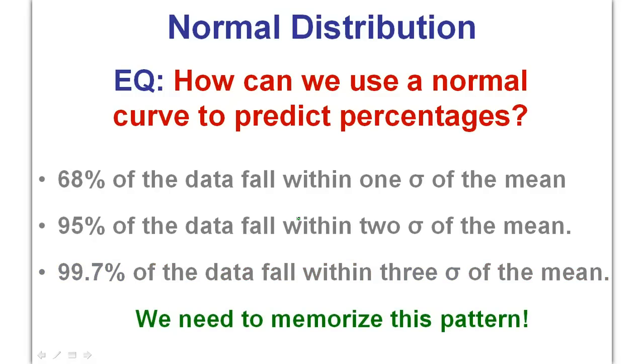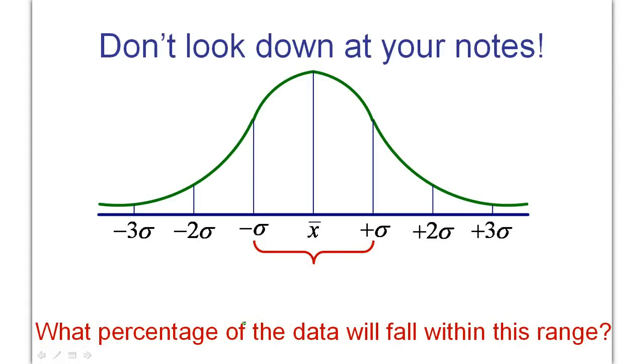I'm going to give you like 15 seconds to memorize these numbers. Study them for 15 seconds. So class, what percentage of the data is going to be in this zone right here? 68%. That's your 68%. One standard deviation away from the mean. What if I go two standard deviations? 95%. All right. Flip your notes back over.